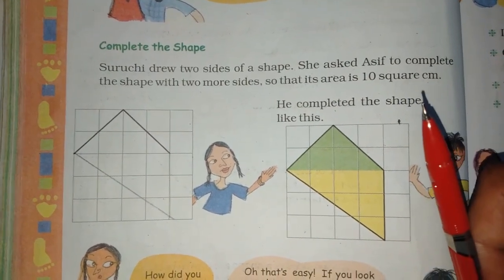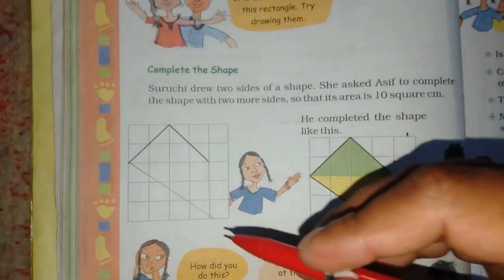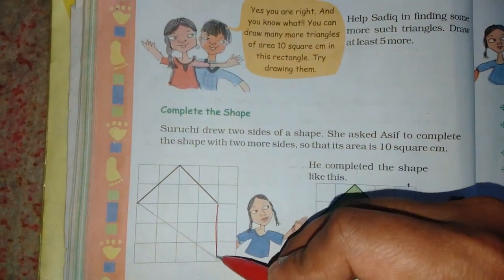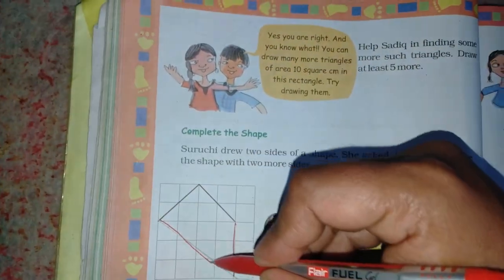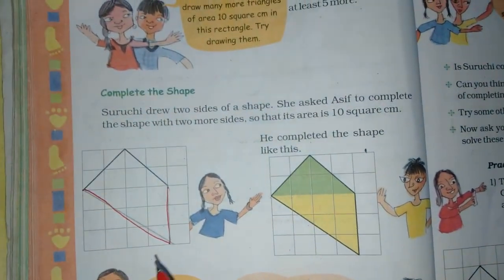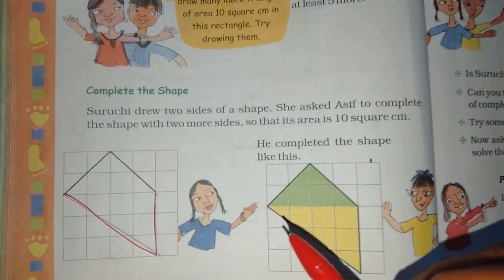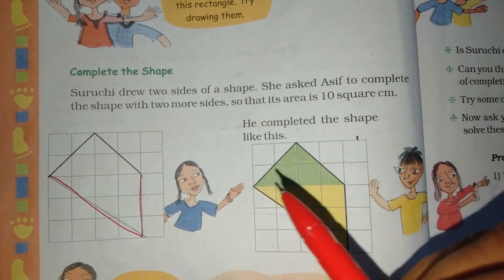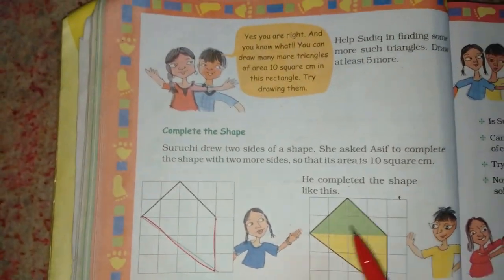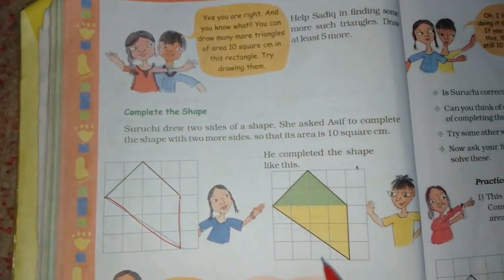Asif has drawn lines and completed the shape like this. He completed a shape like this.